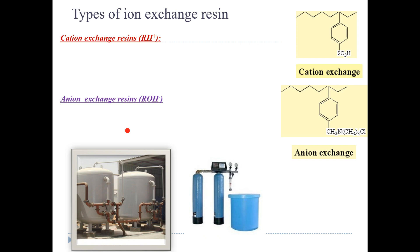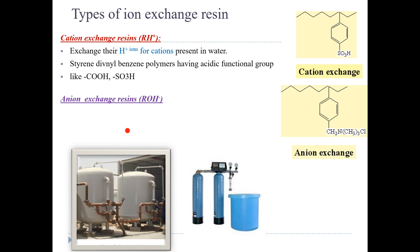The advantage of ion exchange resin is that you can get rid of both cations and anions. There are two exchangers: cation exchanger and anion exchanger. In the cation exchanger, the polymer has H+ ions which can be replaced — they exchange H+ ions for cations. Styrene divinylbenzene polymers have acidic functional groups such as –COOH or sulfonic acid group. For example, H+ is replaced by Ca2+.